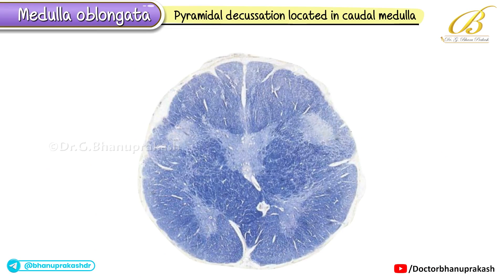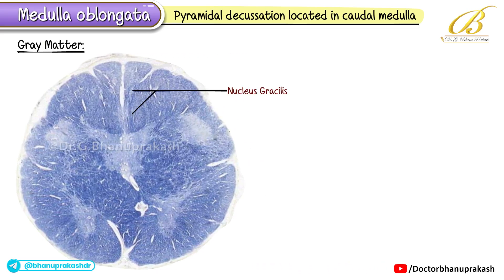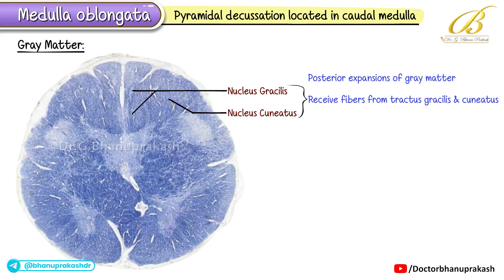Now we explore the pyramidal decussation, located in the caudal medulla, also known as the major motor decussation. If we take a cross-section here, we notice an arrangement somewhat similar to the spinal cord, where central gray matter is surrounded by peripheral white matter. The gray matter contains the nucleus gracilis and nucleus cuneatus — posterior expansions of gray matter that receive fibers from the tractus gracilis and tractus cuneatus, carrying fine touch, vibration, and proprioception.